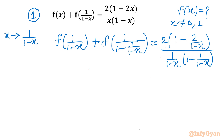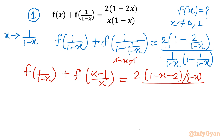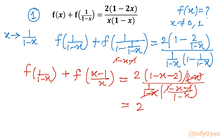Now let's simplify wherever required. I will write f(1/(1-x)) + f of this expression: the denominator gives us (1-x) - 1, which cancels out, leaving (1-x)/(-x), so it becomes (x-1)/x. On the RHS, I write 2 times (1-x-2)/(1-x), divided by (1/(1-x)) times (1-x-1)/(1-x). We can cancel terms, and the first term becomes 2 times (-x-1).